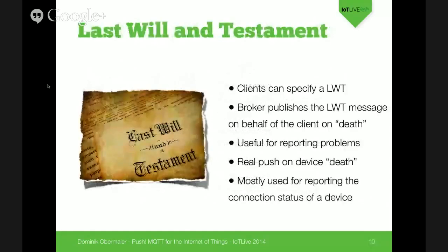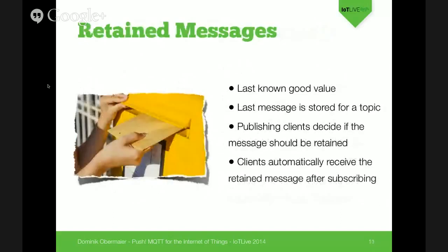Another cool feature of MQTT is last will and testament. When a client connects to the MQTT broker, it can say: when I disconnect not gracefully, please send a message on my behalf. If the broker recognizes a client died, it sends messages to a certain topic and other devices can react. Another great feature are retained messages — each message a client sends can be stored on the MQTT broker on that topic, so when a new client subscribes, it immediately gets the last known good value on that topic.